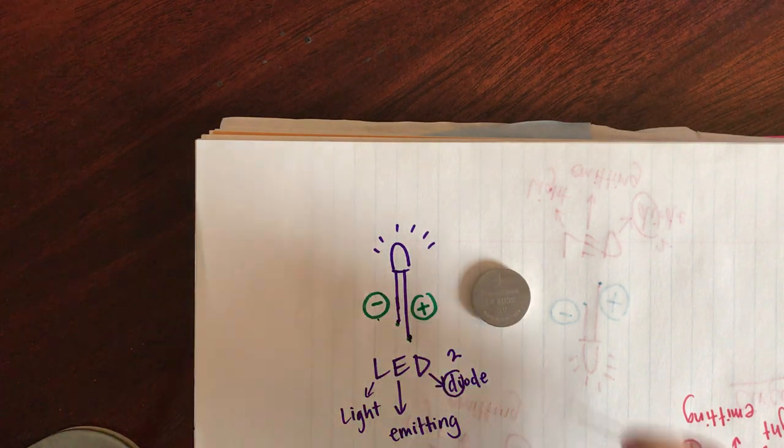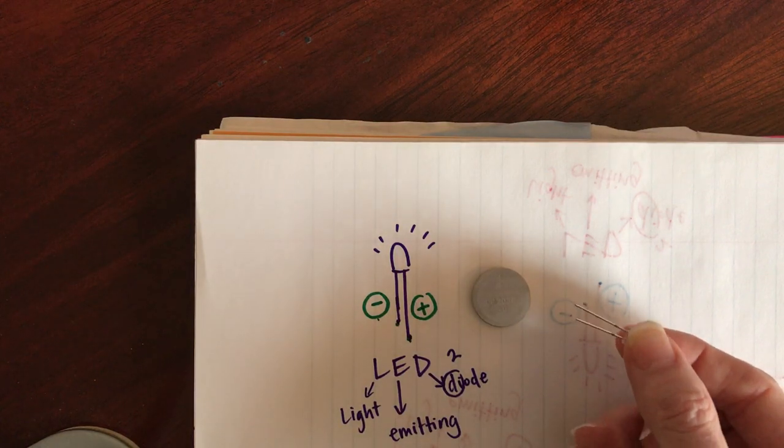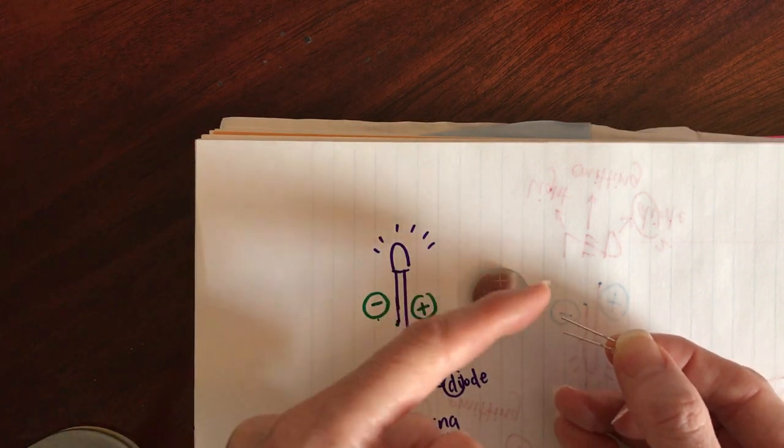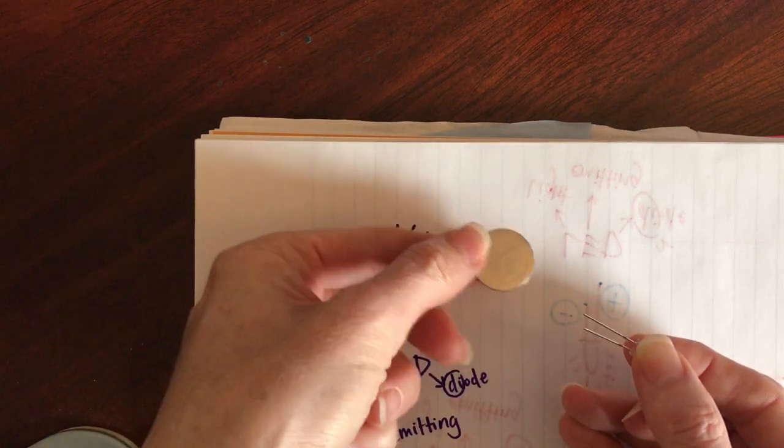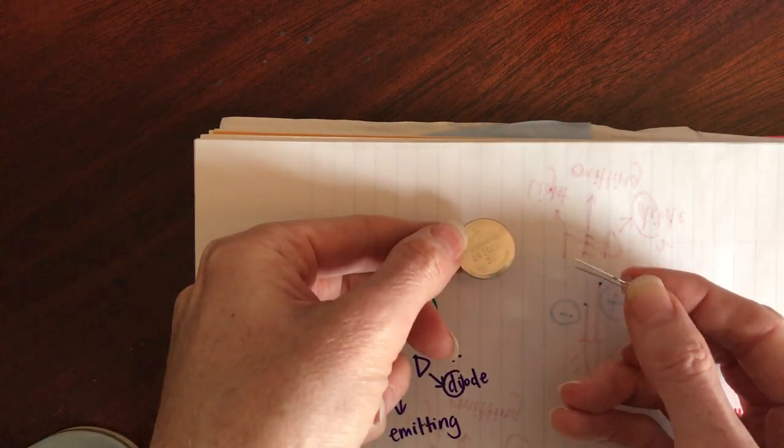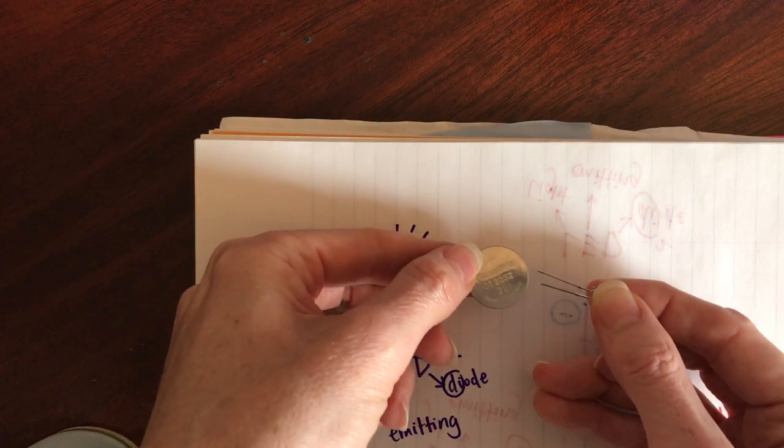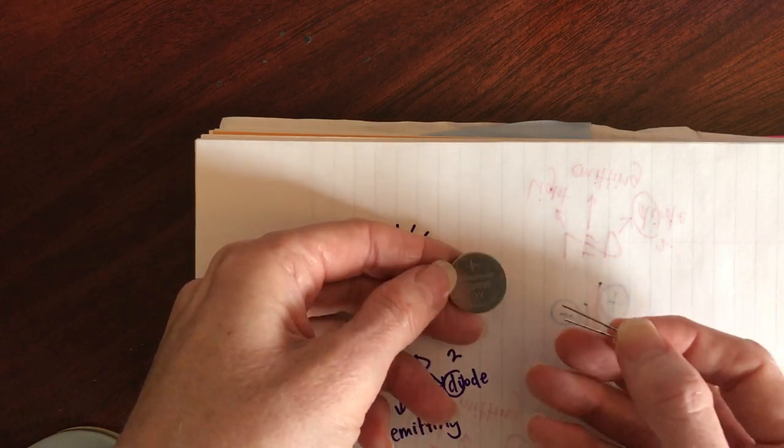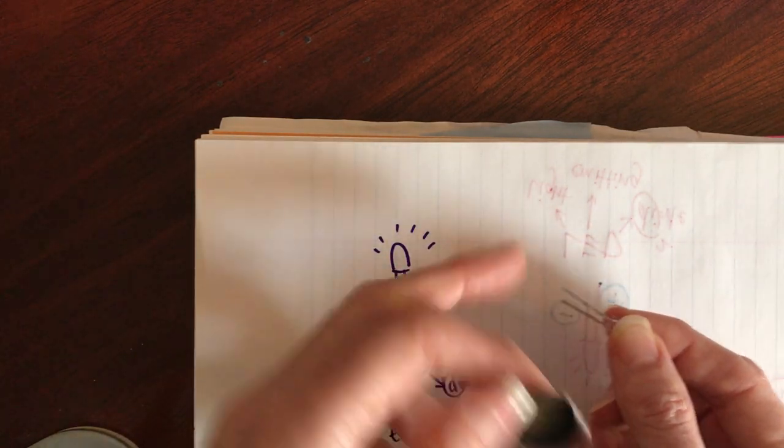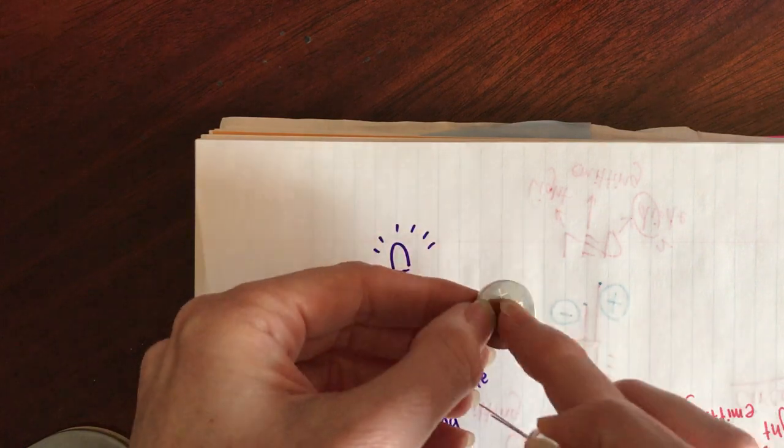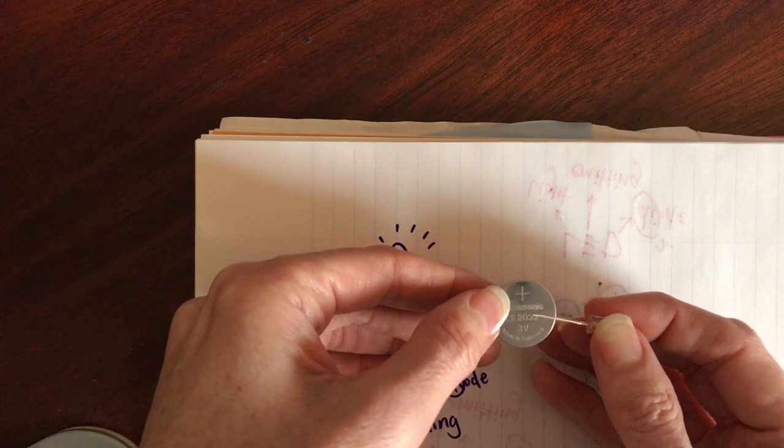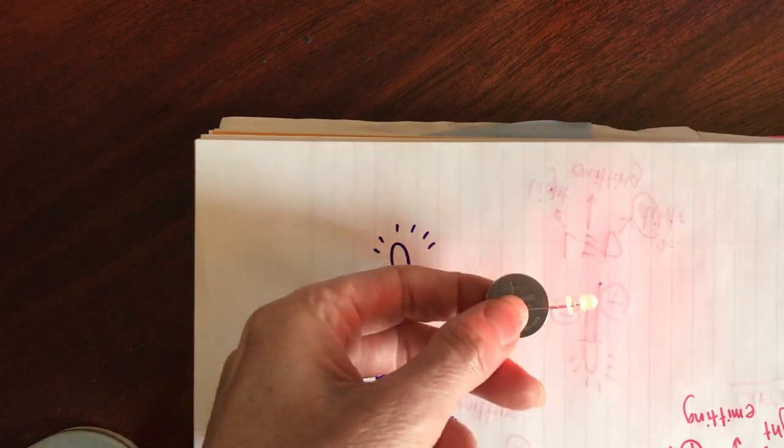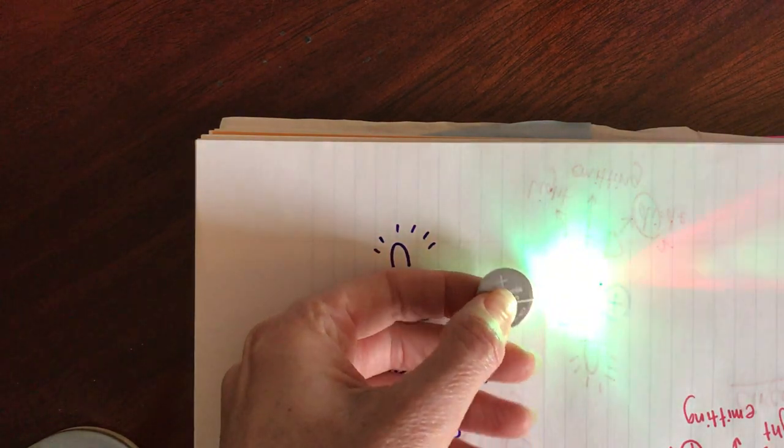And now that you have your battery, you're going to take your LED. You're going to make sure that you see the long leg, the positive leg, and the negative leg. And we're actually going to take this battery and test our LED by sliding the battery between the two legs of the LED. And we need to make sure that that positive leg is the one that's touching the positive side of the battery. And so if we do that, then there we go. Our LED should light up.